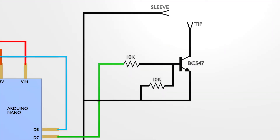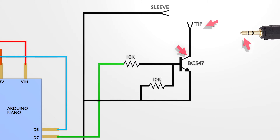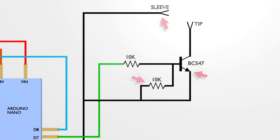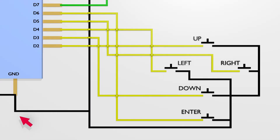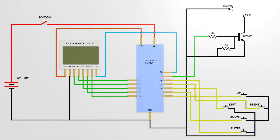The part of the circuit connected to the camera uses the transistor and two 10k resistors. The tip of the 2.5 millimeter jack goes to the collector of the transistor. The emitter goes to ground and to the sleeve of the 2.5 millimeter jack. The base of the transistor is connected to ground via a 10k resistor, and the base is also connected to pin 7 via an 18k resistor. All the buttons are connected to ground directly, and then from pin 2 to pin 6 of the Arduino.